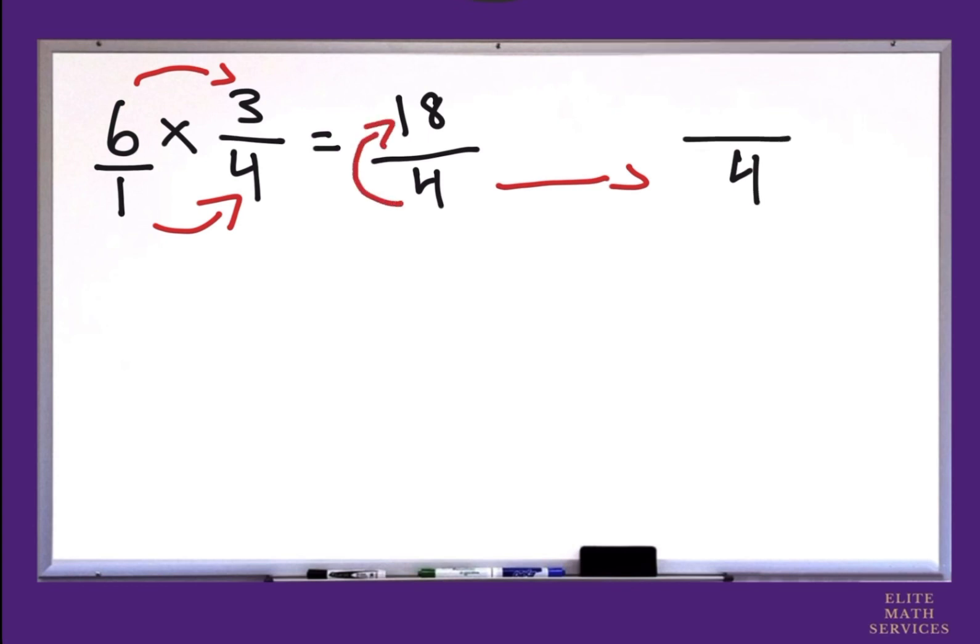Then you must see how many times does 4 go into 18. 4 goes into 18 four times with 2 left over. So 2 is our numerator.